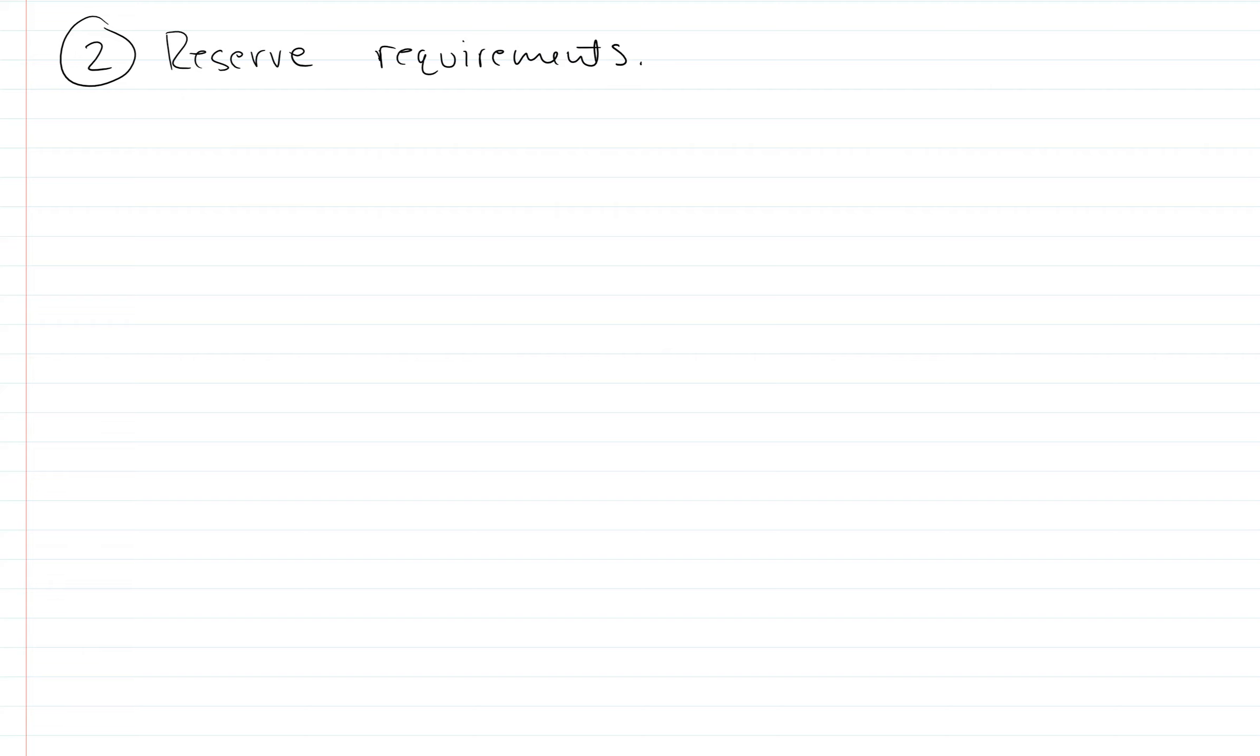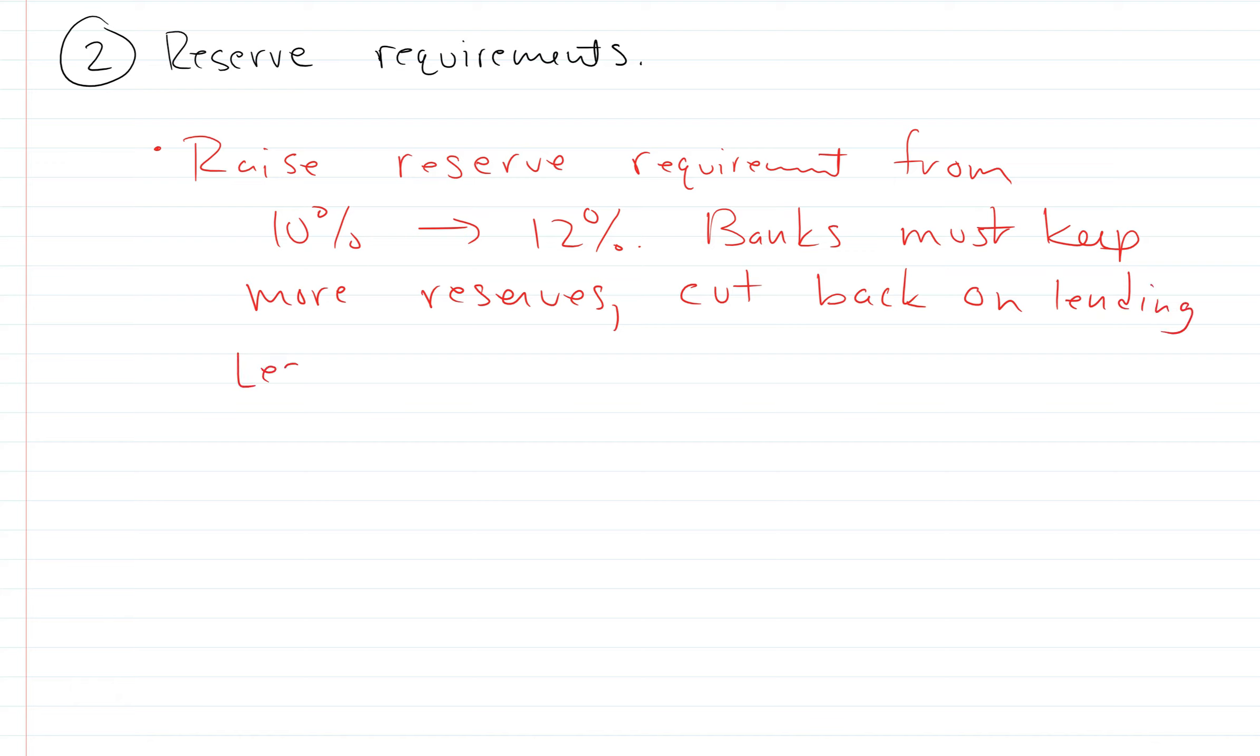For example, if they raise the reserve requirement from, let's say, 10% to maybe 12%, now the banks must keep more reserves and therefore they have to cut back on lending. So then less lending will lead us to higher interest rates and less lending will also lead to less deposits, which would be a lower money supply.